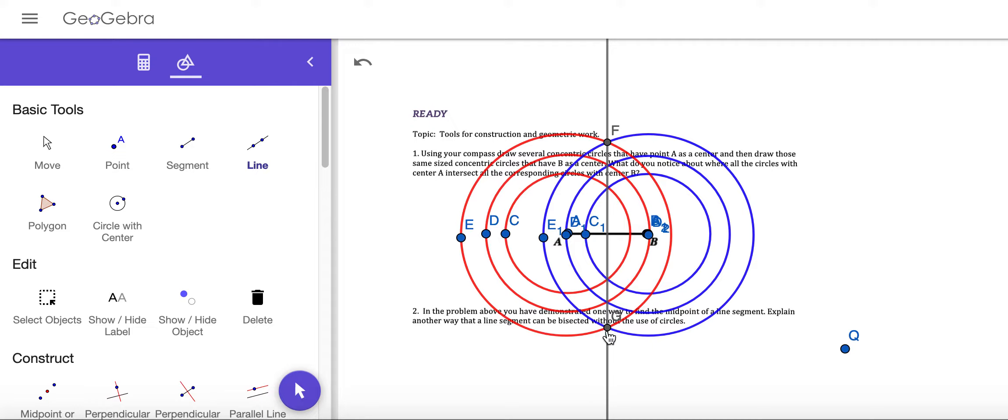So in the problem above, you have demonstrated one way to find the midpoint of a line segment. So right here, where they intersect is the halfway point between A and B. So that is the video for 7.1, the ready.